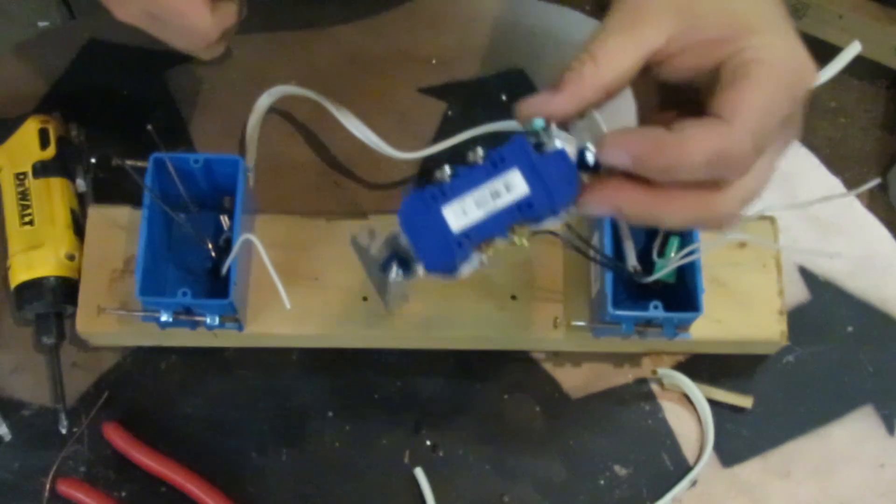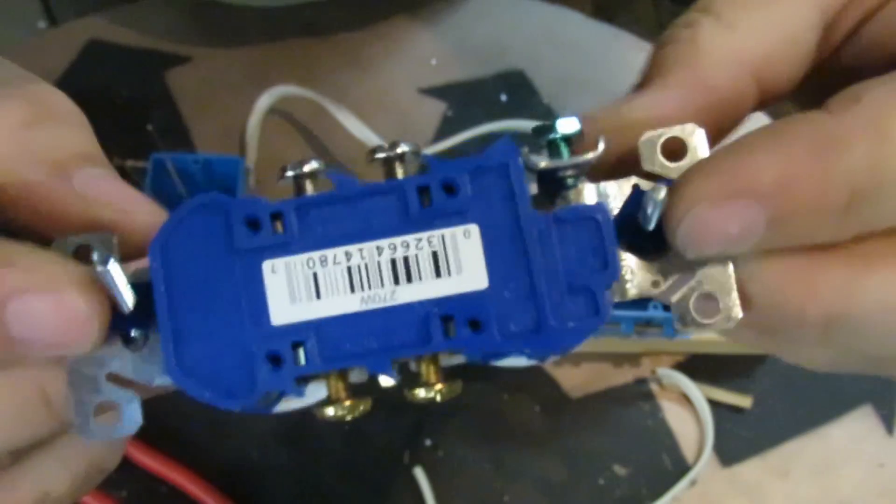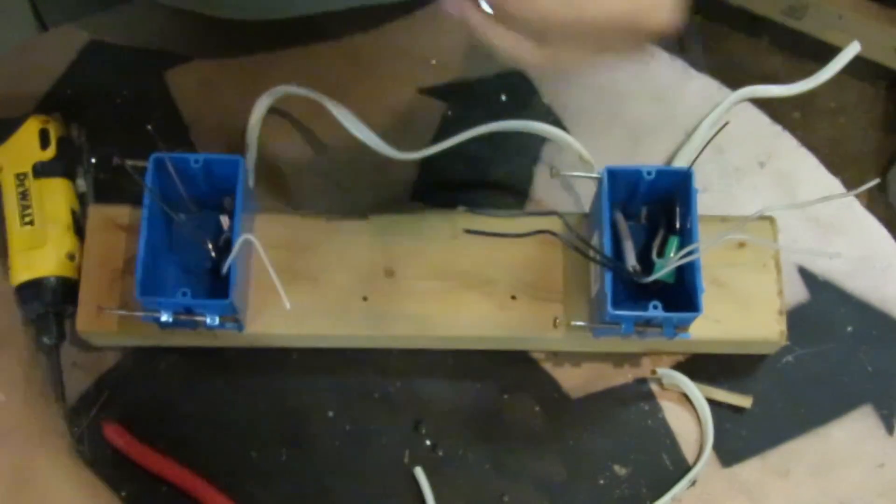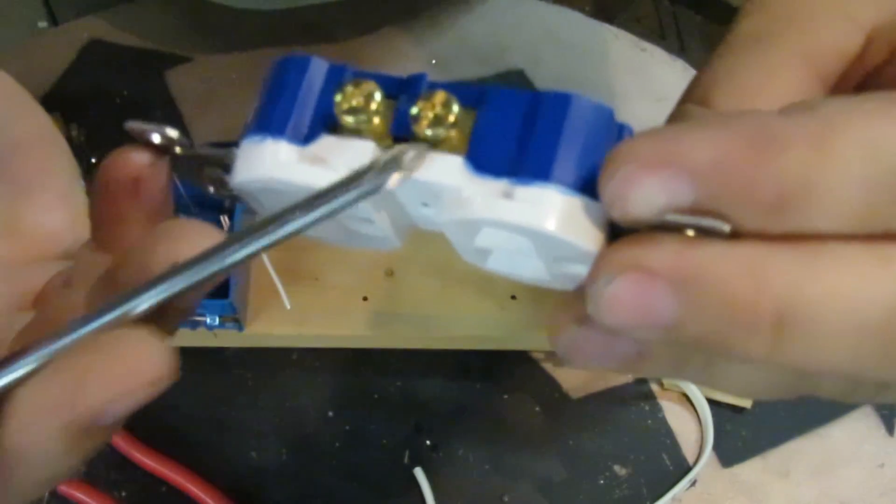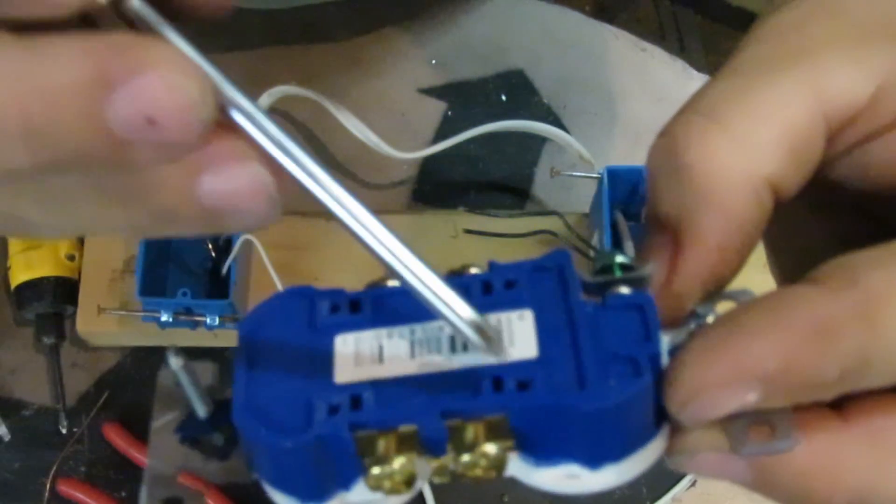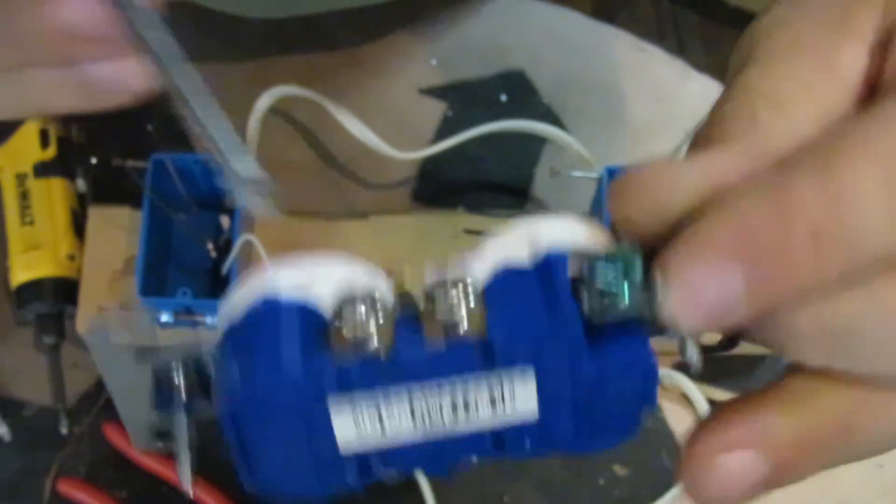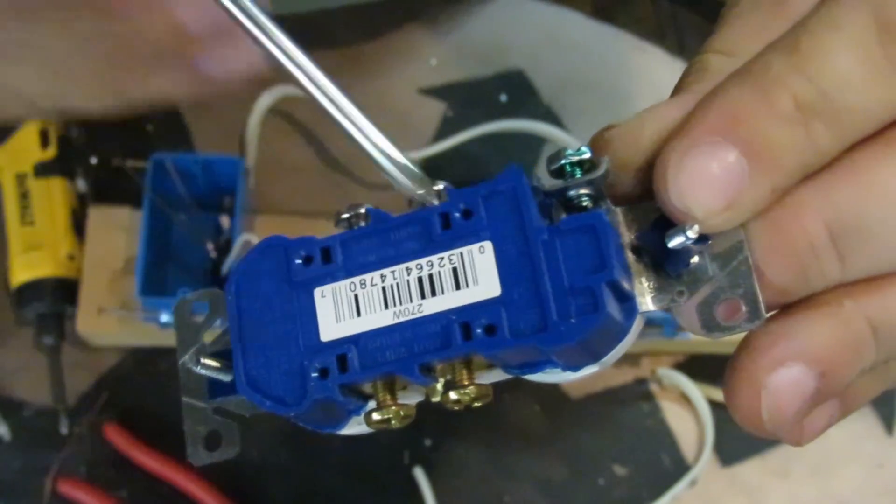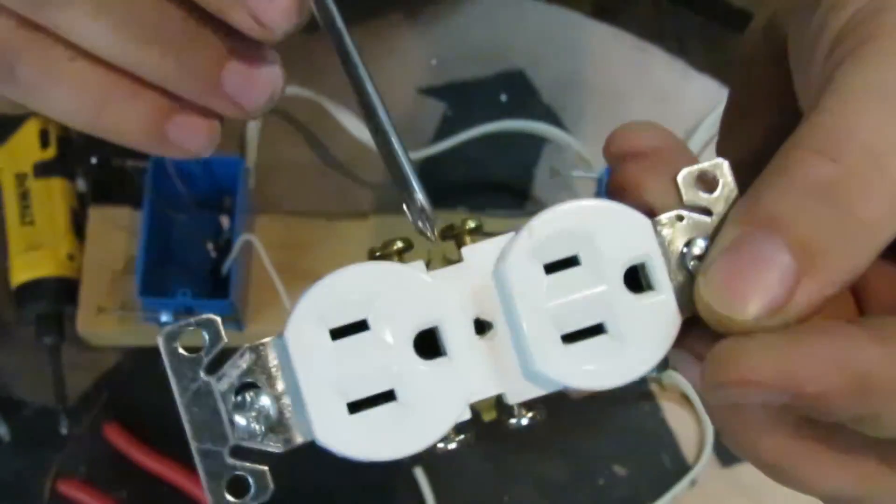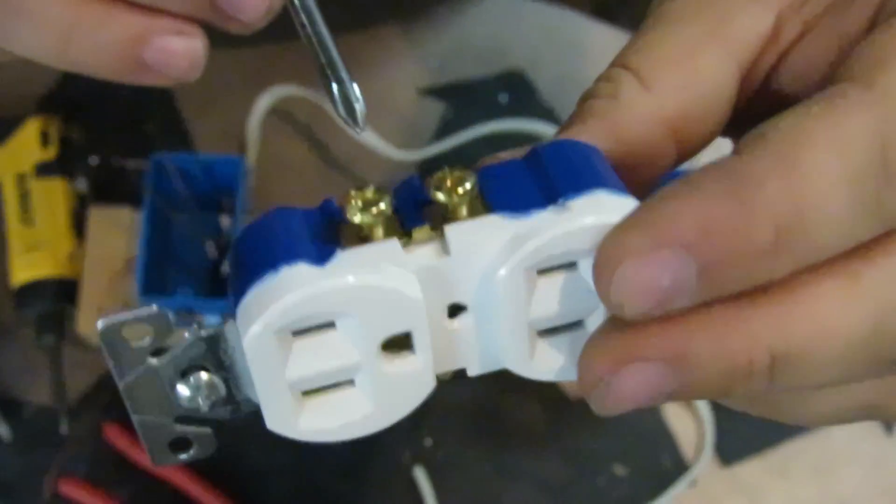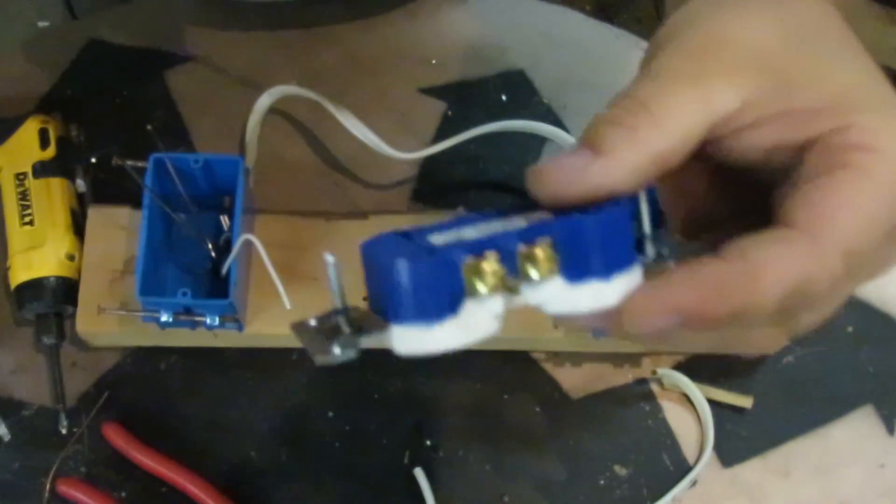Well, your typical receptacle is going to look like this. As you see, there's one side that has two brass screws and two holes in the back, and two silver screws and two holes in the back that correspond. And there's also these little breakouts that you can break out and you would separate the top screw and the top hole from the bottom screw and the bottom hole.